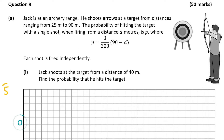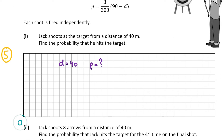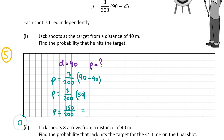Part A1 is worth five marks. Jack shoots at the target from a distance of 40 meters and we need to find the probability that he hits the target, so d = 40 and we find p. Substituting: p = 3/200 × (90 − 40) = 3/200 × 50 = 150/200 = 3/4. So the probability that Jack hits the target from 40 meters is 3/4.